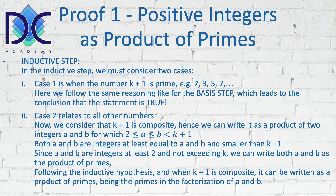In case two, k+1 is a composite number, so we can write it as a product of two integers a and b, where a and b are both between 2 and k+1 — that is, at least 2 and smaller than k+1. Since they are integers at least 2 and not exceeding k, by the inductive hypothesis we can write both a and b as products of primes. Therefore k+1, being composite, can be written as a product of the primes in the factorizations of a and b. This completes the inductive proof.